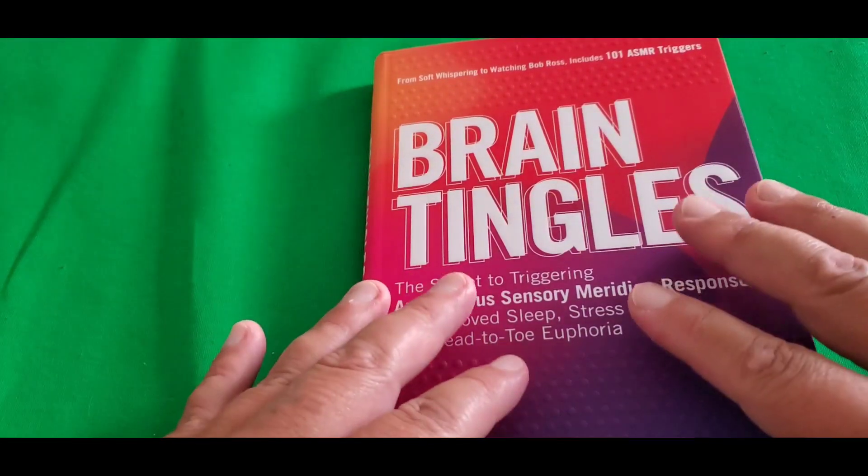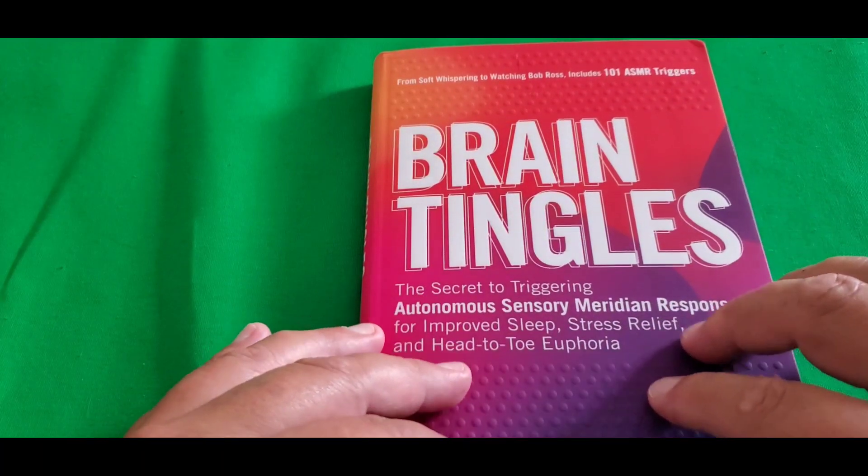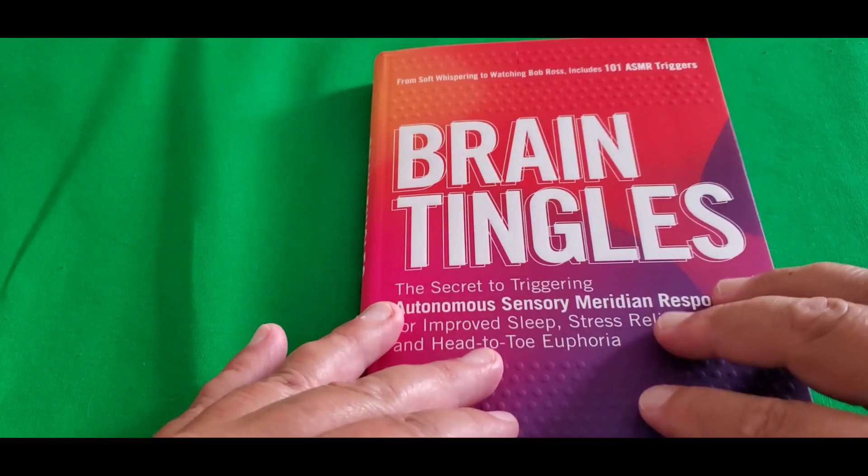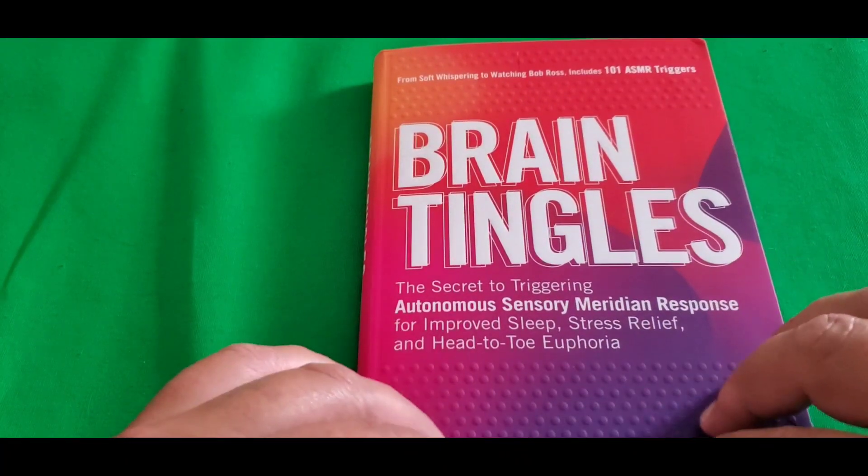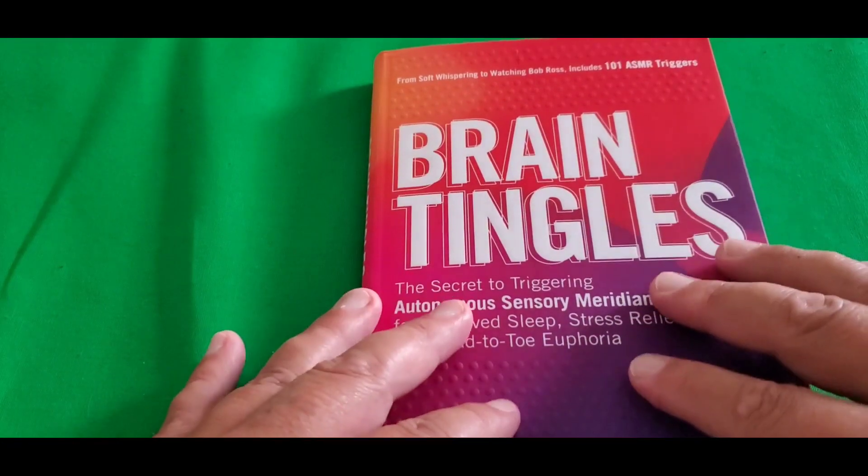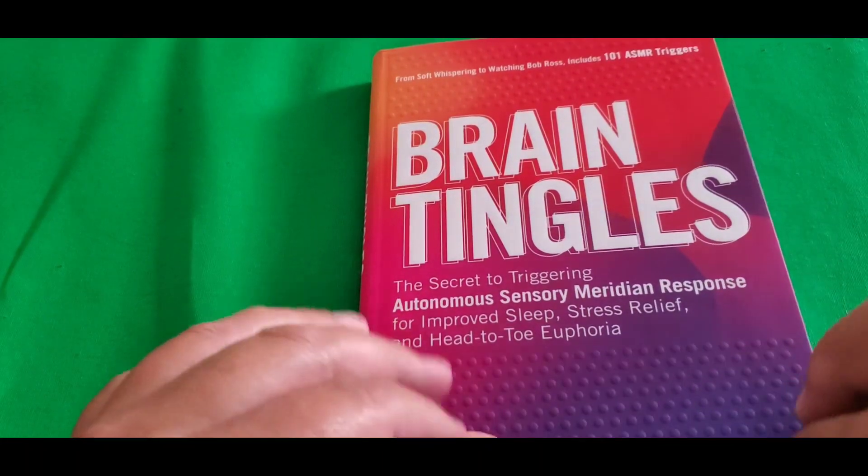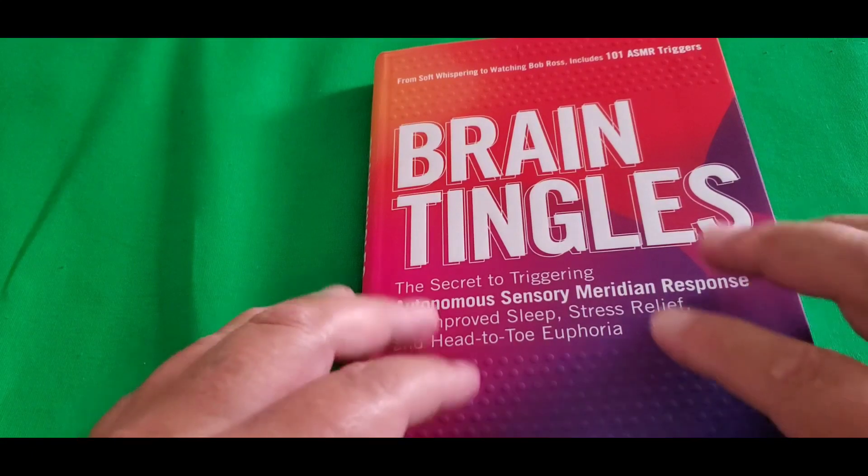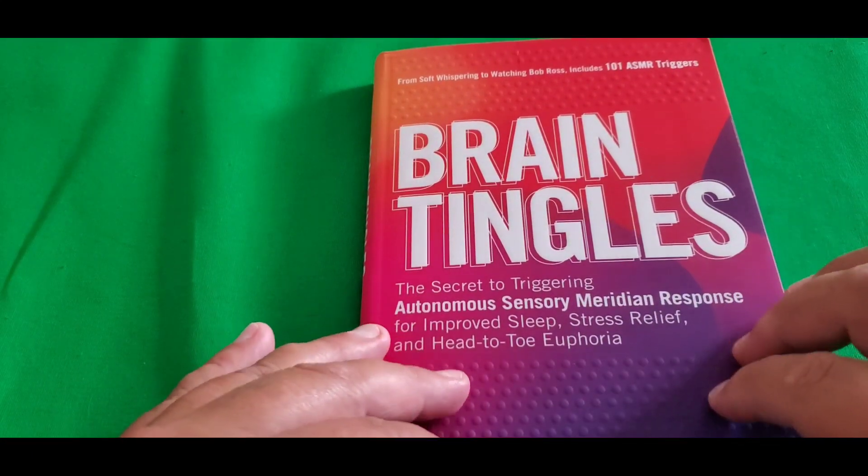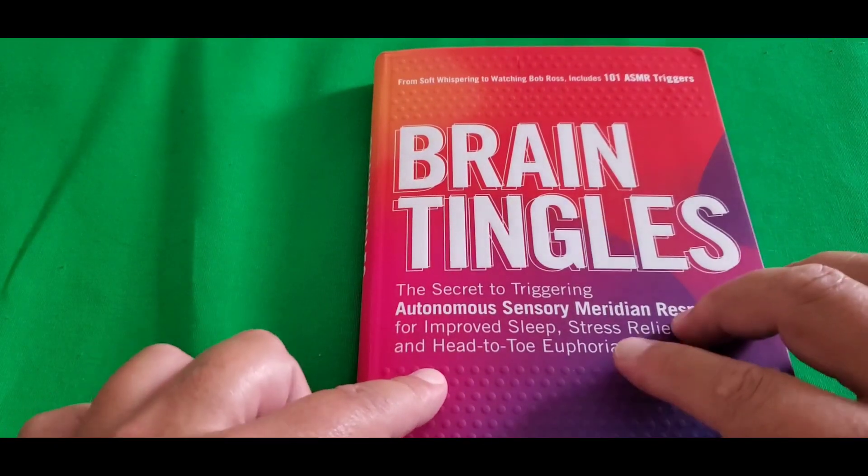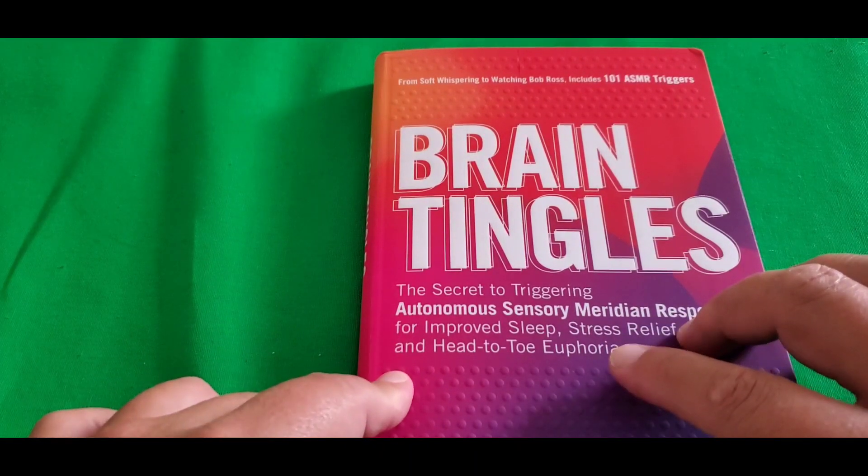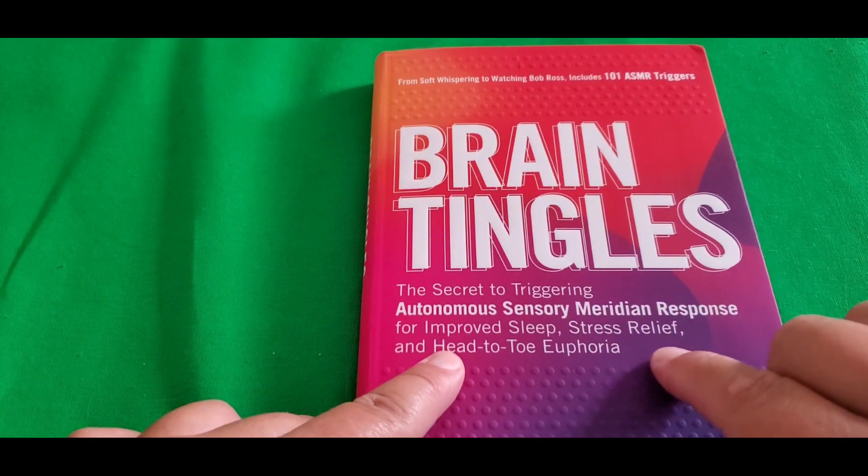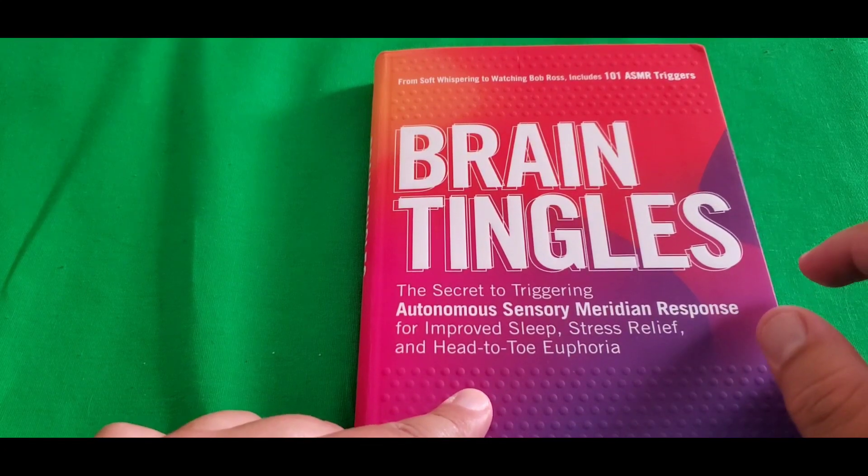So I want to share this book, at least a chapter, and then I'll make little parts to it as time goes. This book is called Brain Tingles and it's pretty much explanatory of what ASMR is, the meaning of it, the understanding of it, the triggers, etc. So it has a lot of info about what ASMR is.